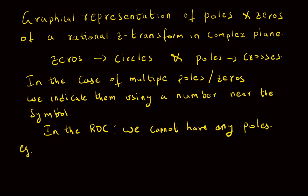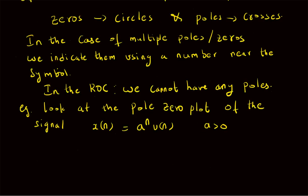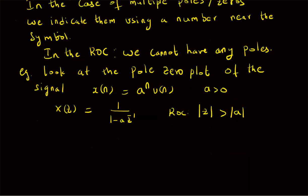Let us look at a simple example. We are going to look at the pole-zero plot of the signal x(n) = a^n u(n), where a is greater than zero. That is a causal signal. The corresponding Z transform X(z) is given by 1 over (1 minus a z-inverse), and the ROC is |z| greater than |a|.